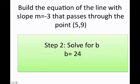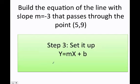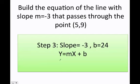Now we're going to do the last step. Since I already have the slope and I already have my y-intercept, remember y equals mx plus b, I just go ahead and set it up. My slope was negative 3, so I just put negative 3x plus 24.